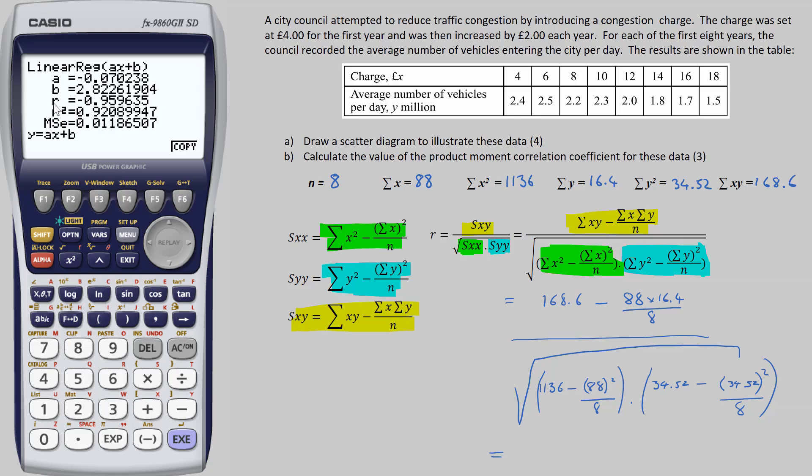PMCC is given by this r value, so I just need to copy that down to an appropriate degree of accuracy. Minus 0.960 to three significant figures. Done. Easy peasy, and our answer is reassuringly close to minus one, as we expected it to be.